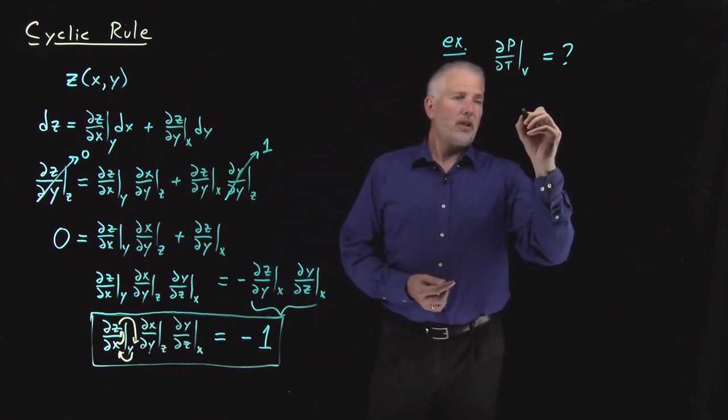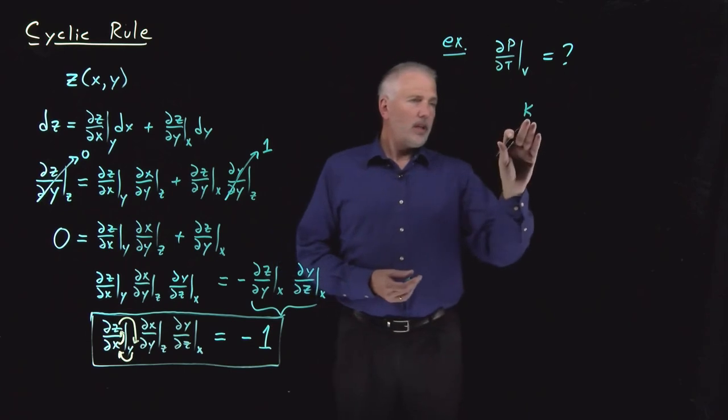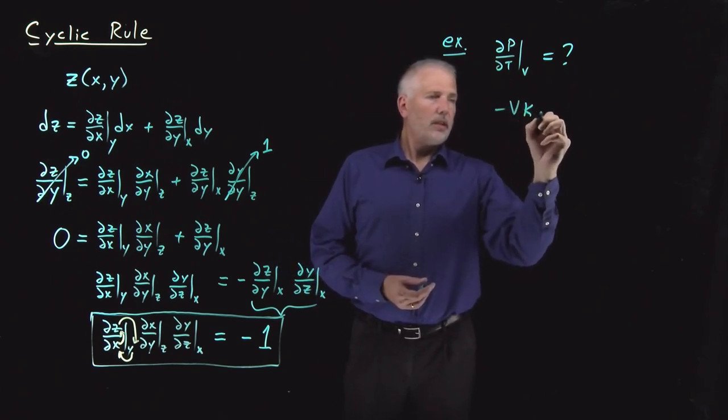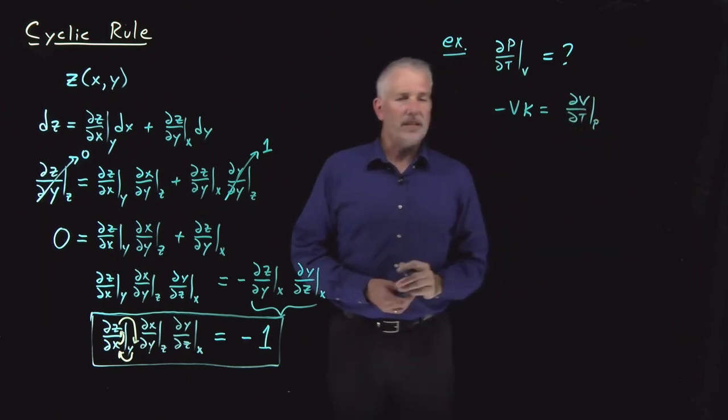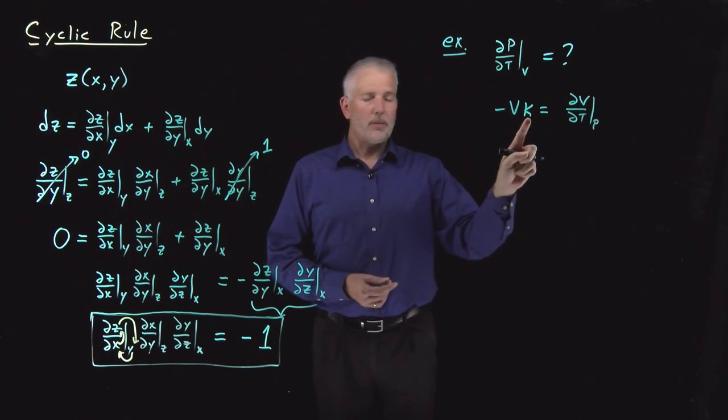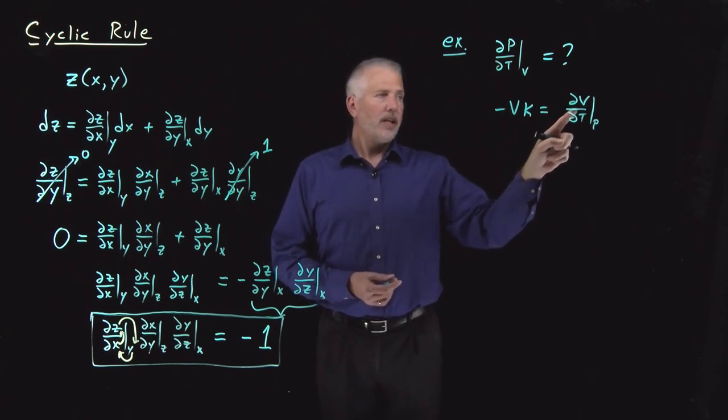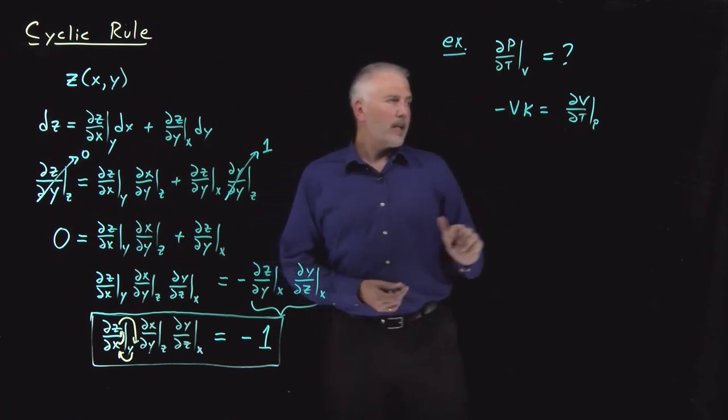In particular, the isothermal compressibility is ∂V/∂T at constant p. That's a V and a T and a p, just in a different relationship than these.